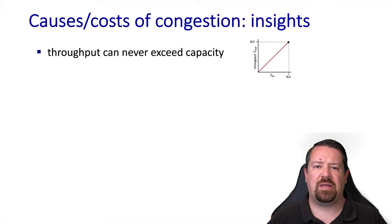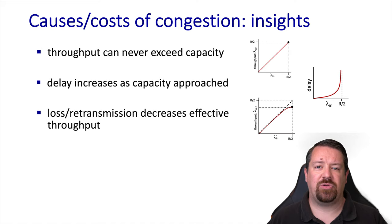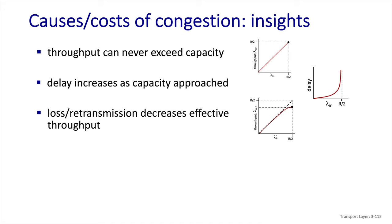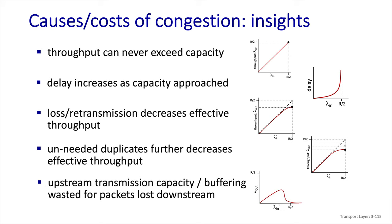We know that throughput can never exceed capacity, and as we try to use all of the capacity in a packet switched network the queuing delay increases exponentially. Loss and retransmissions take a bite out of our available bandwidth, and unnecessary retransmissions further reduce our efficiency. Any packets that are dropped waste any resources they have consumed before the point in the network at which they are dropped.